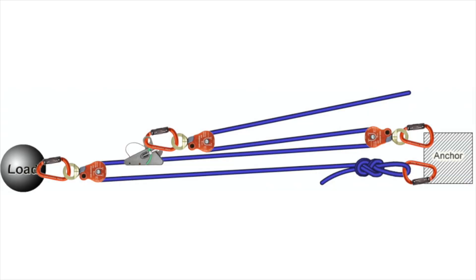Now we have a compound system that we saw in a previous video, and we'll again use the T-method to find its ideal mechanical advantage. If you think you've got the hang of this, you might want to pause the video here, work it out yourself, and then come back to compare your results. Once again we start by labelling our input force T. Following the rope down to the first pulley, we can label the rope entering and leaving the pulley T. This gives us the tension on both sides of the pulley so we can find the tension on the rope grab: T plus T is 2T at the rope grab.